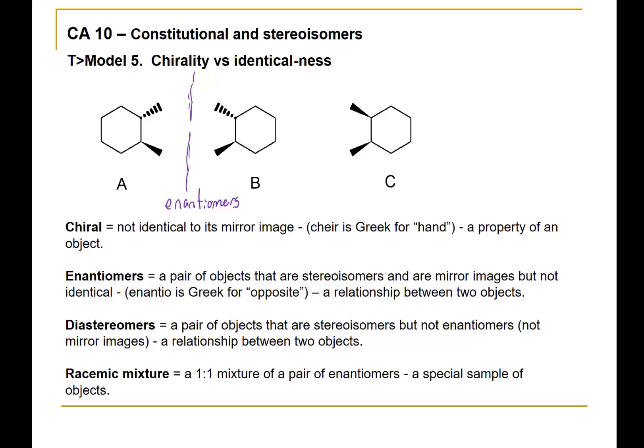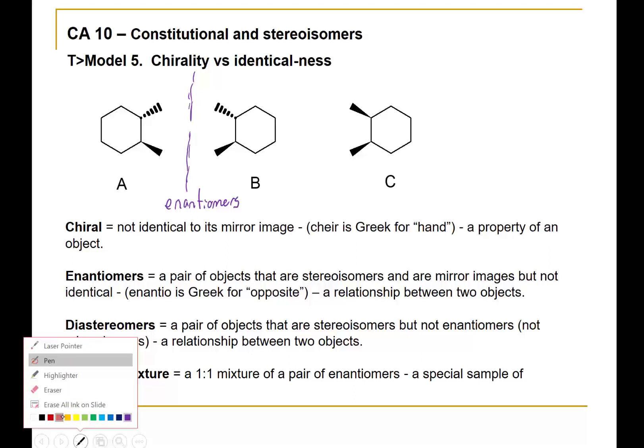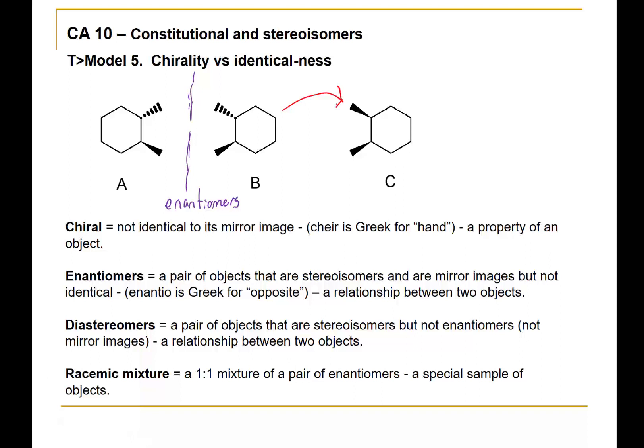So then you're asked: what's the relationship between B and C? They have the same molecular formula, the same attachment of atoms, and the same name — 1,2-dimethylcyclohexane — but one is cis and the other is trans. They're definitely not mirror images, so if they're not enantiomers but they are stereoisomers, then the only thing left is diastereomers.